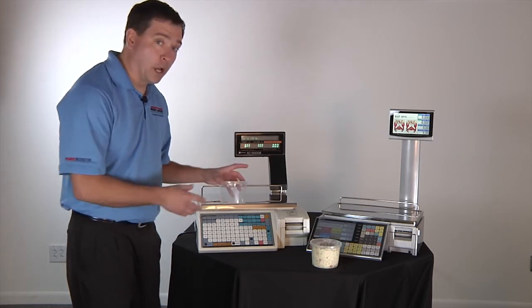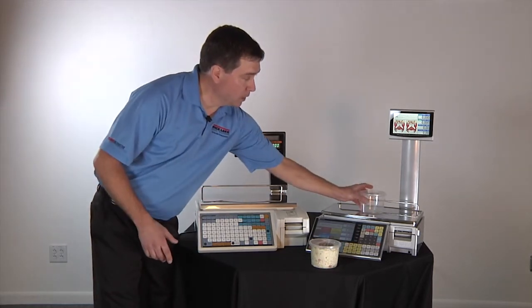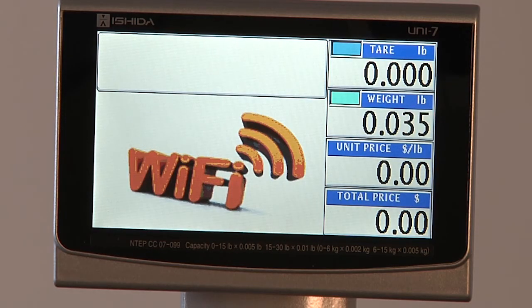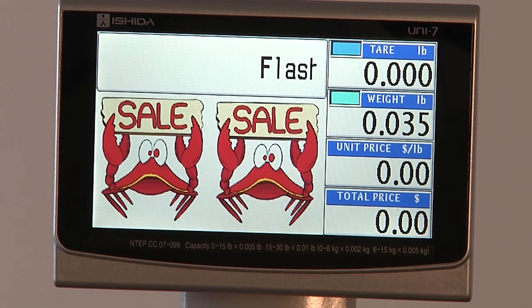When I place the same container on the dual ranging scale, the scale registers it as .035 or 5 thousandths of a pound less.